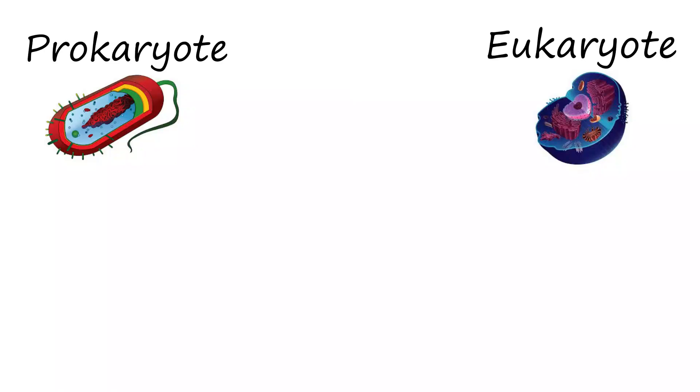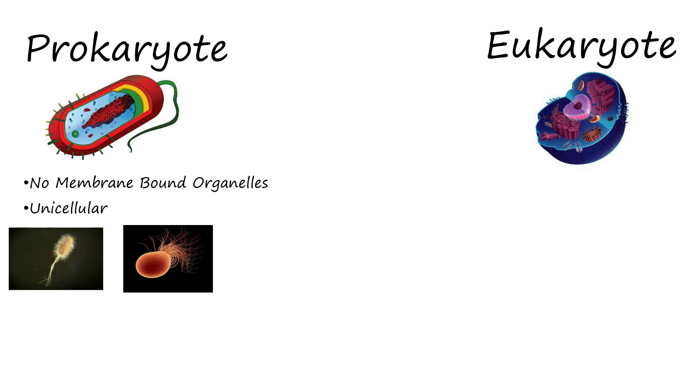Here we have two cells, prokaryotic and eukaryotic. Prokaryotic cells have no membrane bound organelles and are unicellular organisms. Examples of this type of cell include bacteria and archaea.